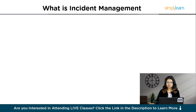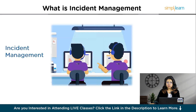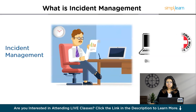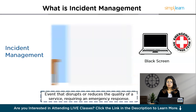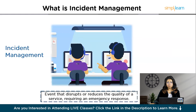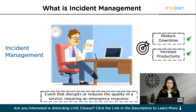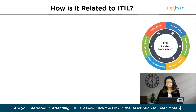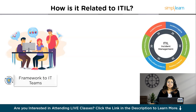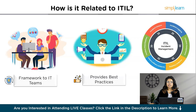So, what is incident management and how is it related to ITIL? At its core, incident management is a process used by development and IT teams to respond to disruptions and restore services to their operational state. The goal is to reduce downtime and minimize the impact on productivity. ITIL, or Information Technology Infrastructure Library, is like a cookbook for IT services — it provides best practices, and incident management is one of its key recipes. ITIL gives IT teams a framework to manage incidents efficiently, ensuring they are not just putting out fires but also learning how to prevent them.